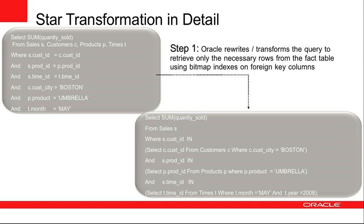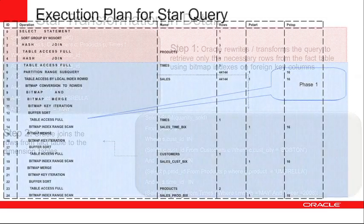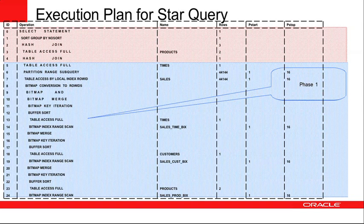By using bitmap index lookups we're able to retrieve a bitmap for each set of rows that matches each of those filters. We then do a bitmap merge operation that adds those bitmaps together — a bitmap is a series of ones and zeros that can be easily added together using very little CPU and memory resources. Once we have that combined bitmap we do a row ID lookup on the sales table and extract the matching rows. Once we have the result set from the sales table we enter phase two, where Oracle joins that result set from the fact table out to the dimension tables to pick up any additional information necessary for the query. It's often easier to understand star transformation when you look at an execution plan, which we'll show in two phases.